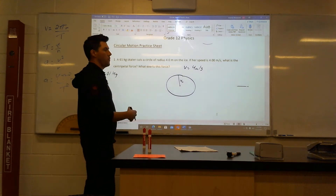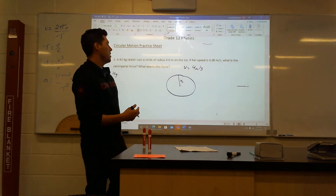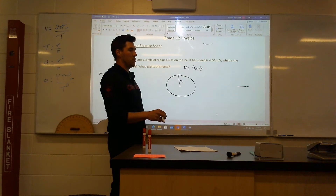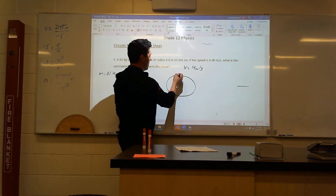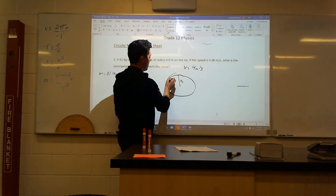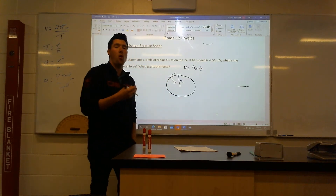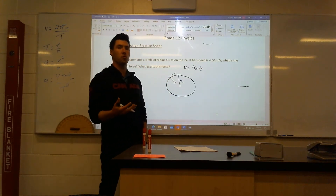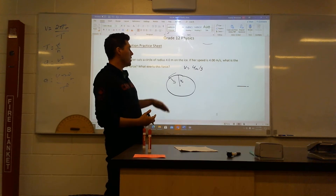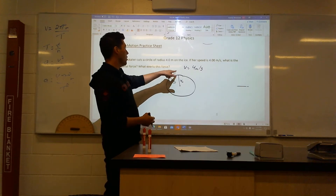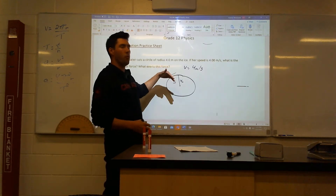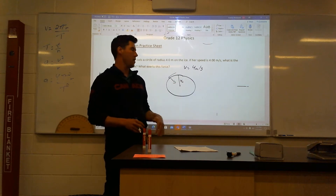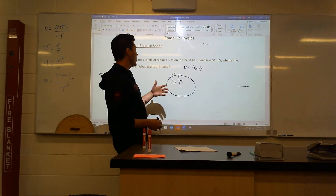Basically, we want to find the centripetal force. Something has to be creating a force inward. So if this person is moving this way, something has to be going inwards to keep them on this actual circular path. Because otherwise, they would continue going straight. So this needs to be the force pushing inwards. Let's get that.